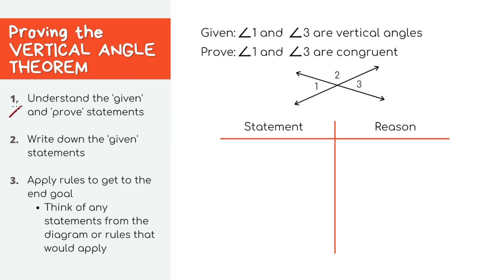First let's understand the problem. It's saying that angle one and angle three are vertical angles which means that they're directly across from each other like this. In the proof we need to show that the angles are congruent. So basically if we prove that the measure of angle one and the measure of angle three are equal, we've done our job.